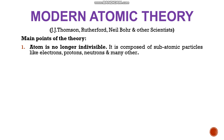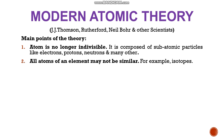Now the first point of modern atomic theory: atom is no longer indivisible. Dalton said that atom is indivisible because subatomic particles were not discovered at that time. But now subatomic particles have been discovered, and these particles are protons, neutrons, and electrons — and also many other subatomic particles, but the most important ones are electrons, protons, and neutrons. This shows that the atom is divisible and particles smaller than atoms do exist.